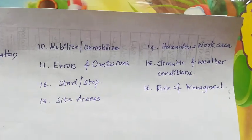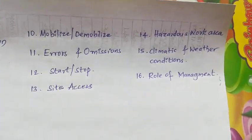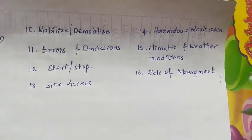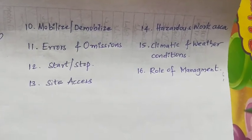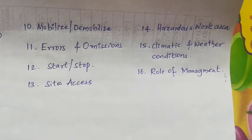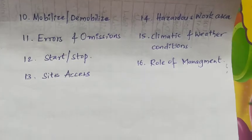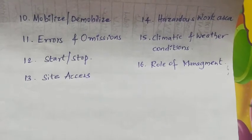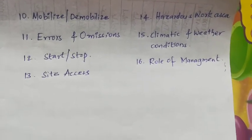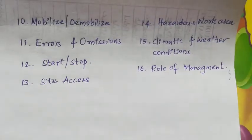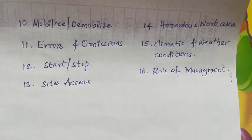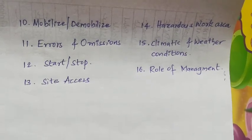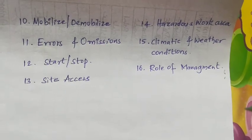Next is mobilization or team mobilization. This relates to moving resources such as equipment or manpower to and from the project as a result of changes. It obviously causes work disruptions, and productivity may drop during this period as time is lost when the crew moves from one area to another work assignment. Next are errors and omissions. Increased errors and omissions impact labor productivity because the resulting changes are usually performed on a crash basis, causing dilution of supervision and other negative impacts.